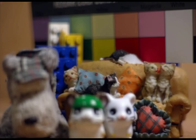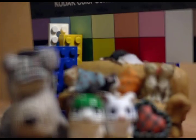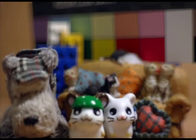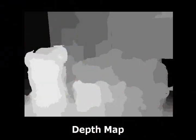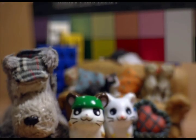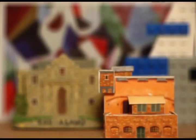This is a refocusing result from the light field of a 4x4 angular resolution. It looks promising, but due to under-sampling, we can still see the ghosting effect in the out-of-focus regions. We use the estimated depth map to boost angular resolution to 25x25 and then perform refocusing. We can see the ghosting effect is greatly reduced.